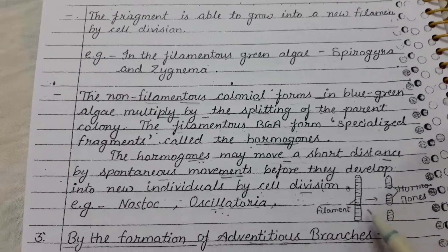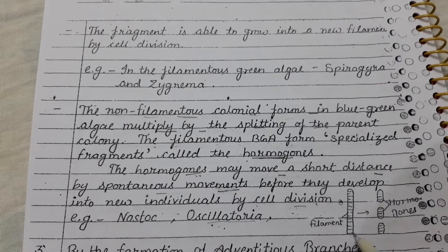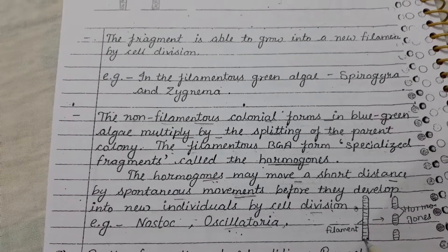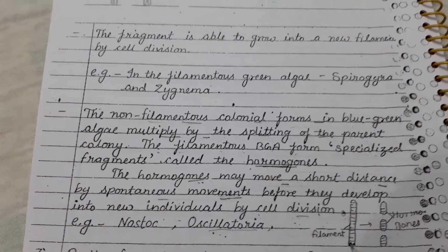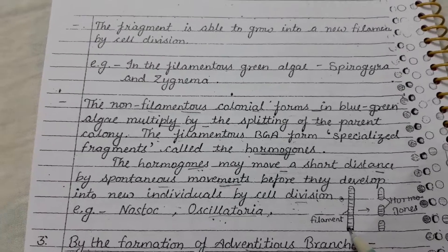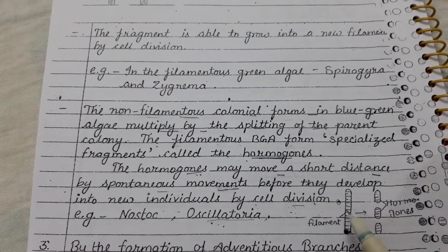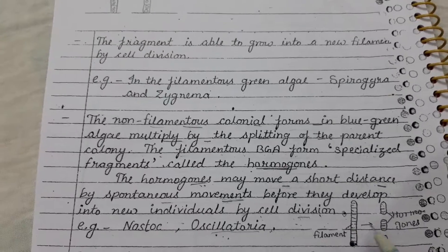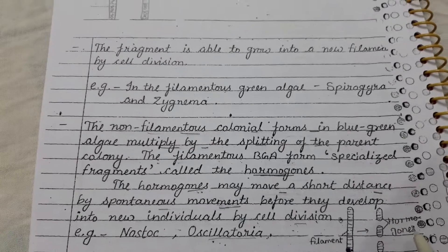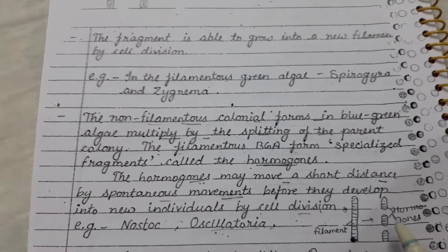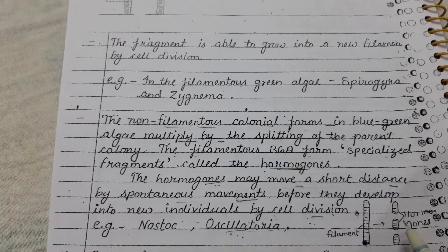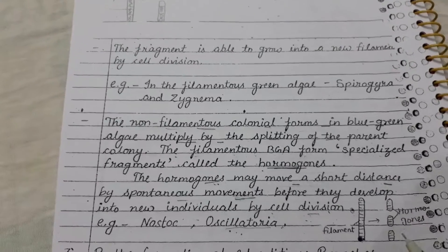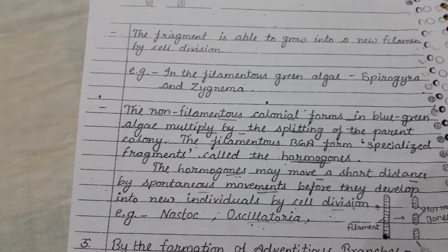In this diagram, you can see a fragment of a cyanophycean member like Nostoc or Oscillatoria. At the point of separation, these are called hormogones, and they separate near the disc and form hormogones.